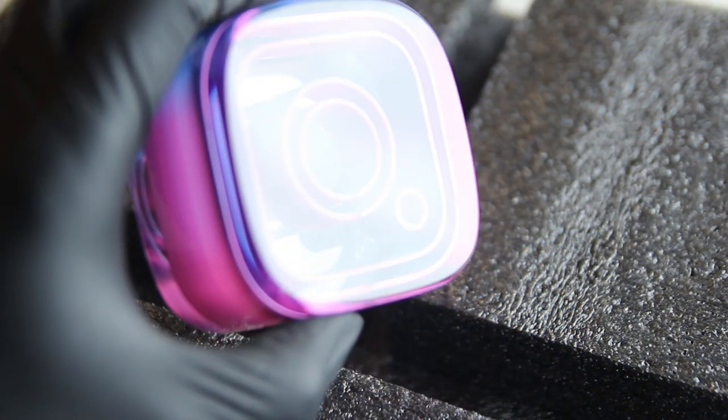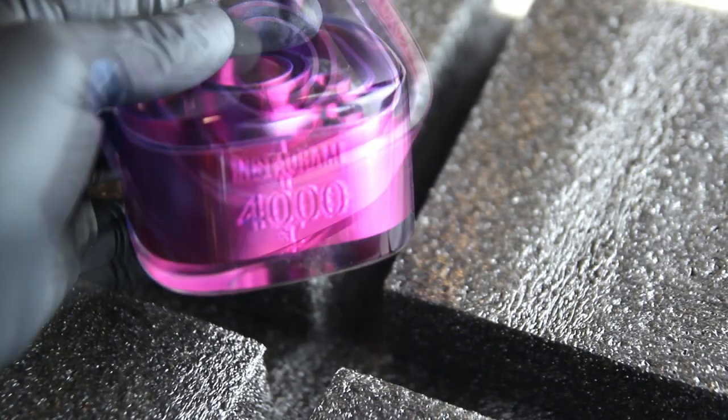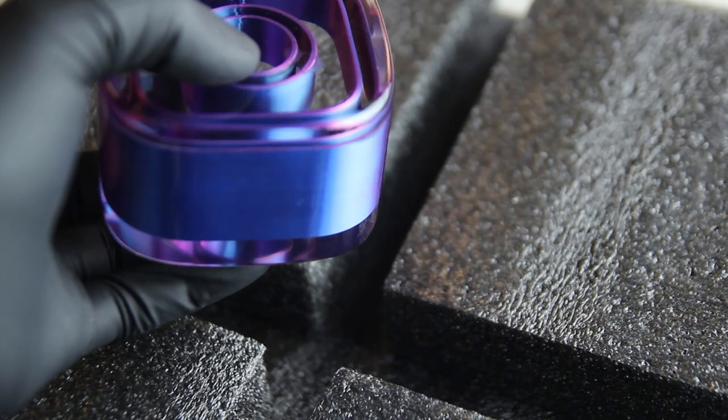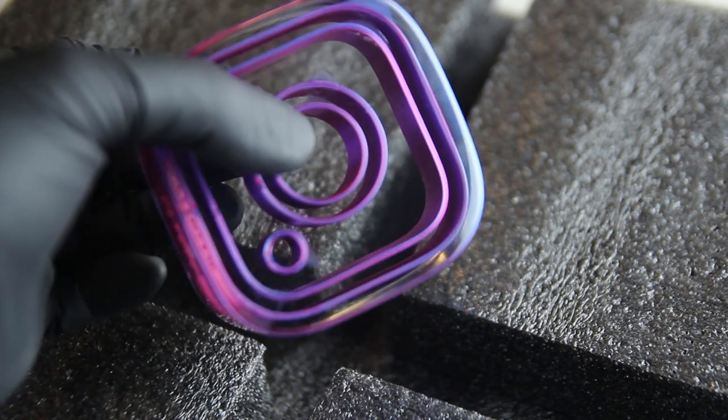If you don't want to go through all the sanding and polishing, what you can also do is sand it to 500 and then use a clear coat - like a polyurethane 2K clear coat with a spray gun to get a good result as well.